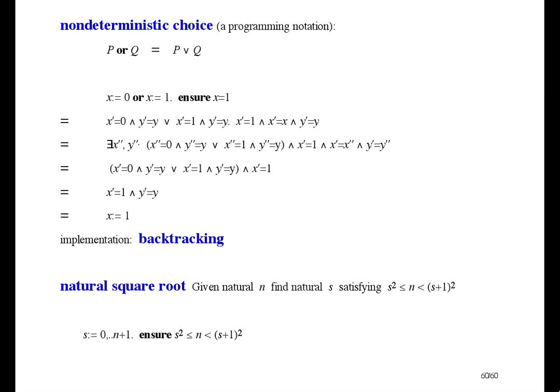As you see, the combination of non-deterministic assignment and ensure makes some programs very easy to write, but very inefficient to execute. There are programming languages with these kinds of features. The best known is probably Prolog. And there are some that have backtracking in the limited context of pattern matching, such as ML and Haskell.